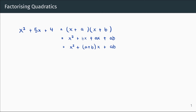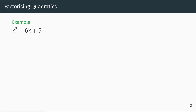So we're finding two numbers that multiply to give four and add to give five. We can quickly see that a and b must be four and one, since four times one equals four and four plus one equals five. Therefore x squared plus five x plus four can be factorized to x plus one multiplied by x plus four.